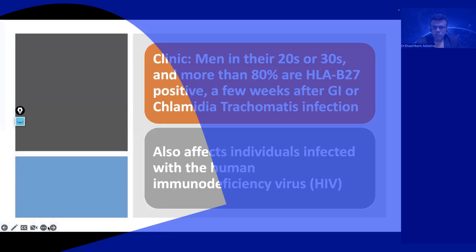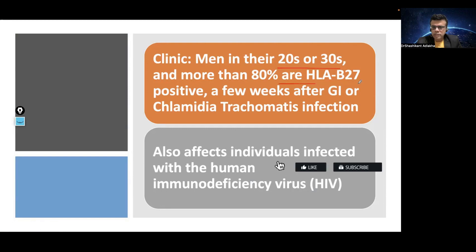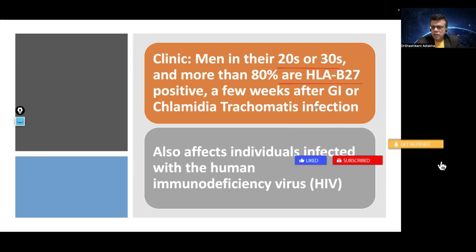Men in their 20s or 30s commonly present with Reiter's syndrome, and more than 80% of them are HLA-B27 positive. It generally starts with a history of GI infection or a Chlamydia infection, which could be sexually transmitted. It is also fairly common in individuals with HIV infection.